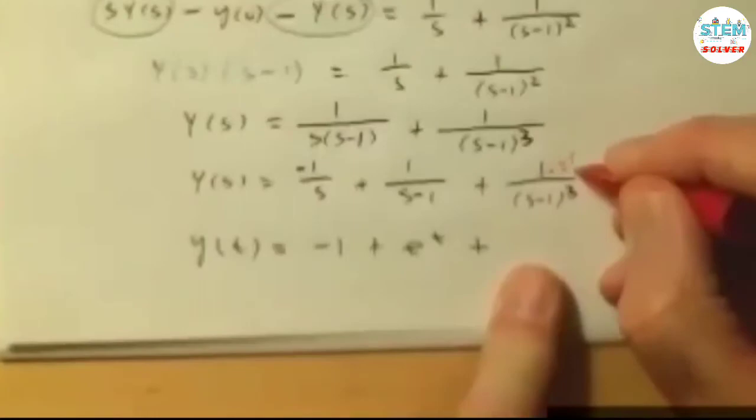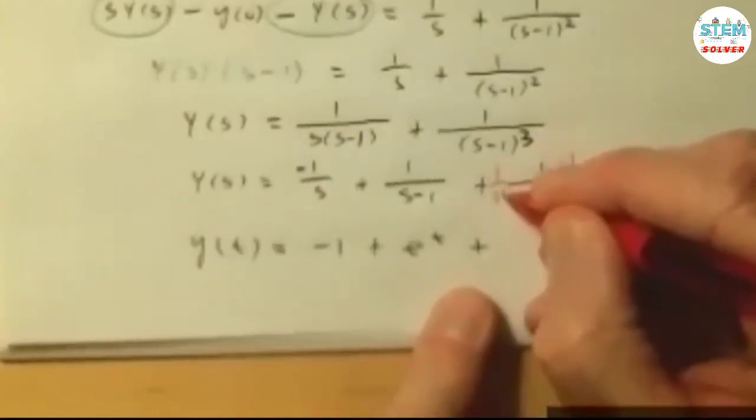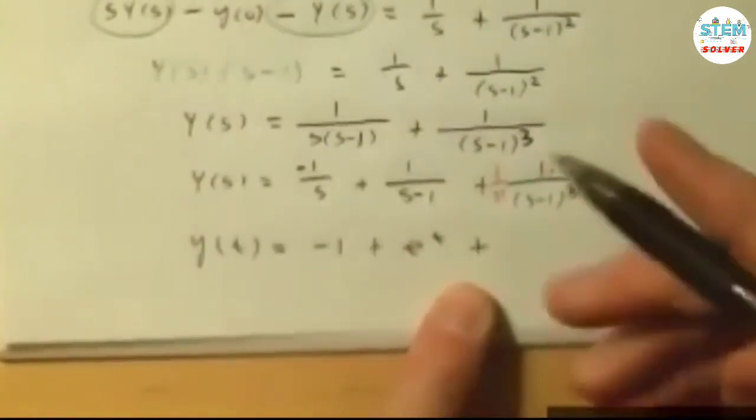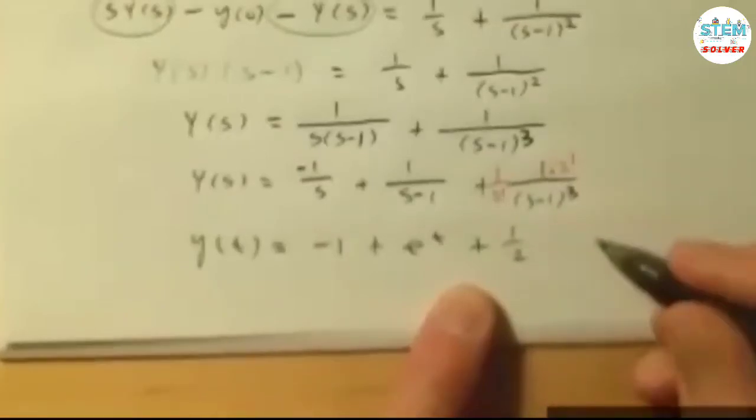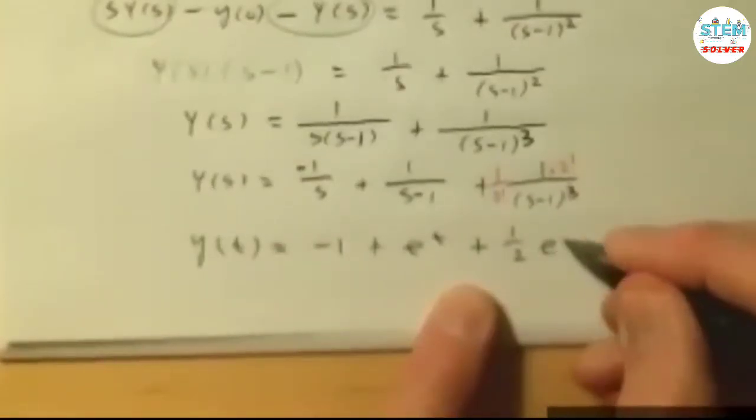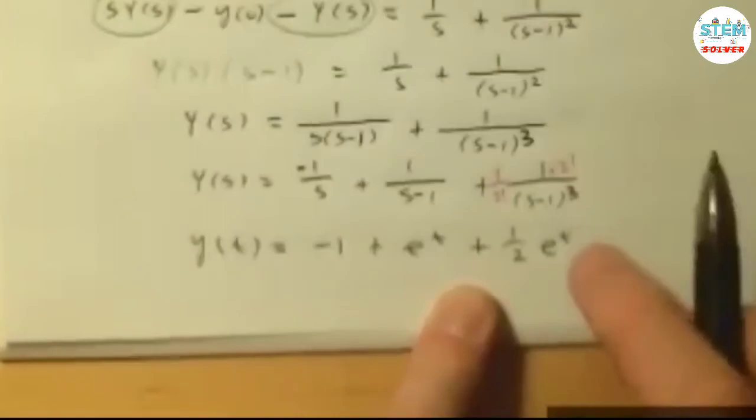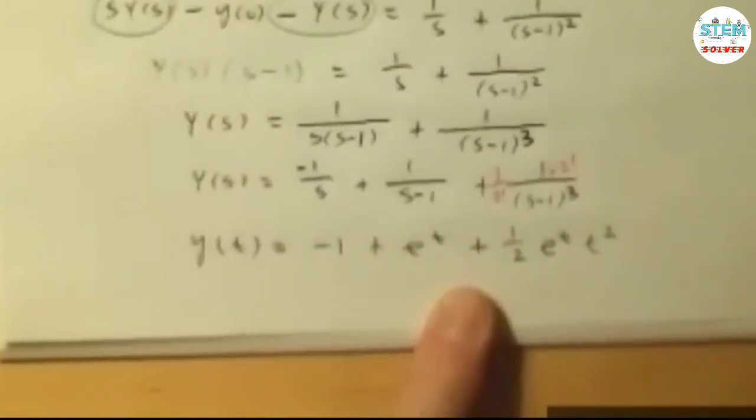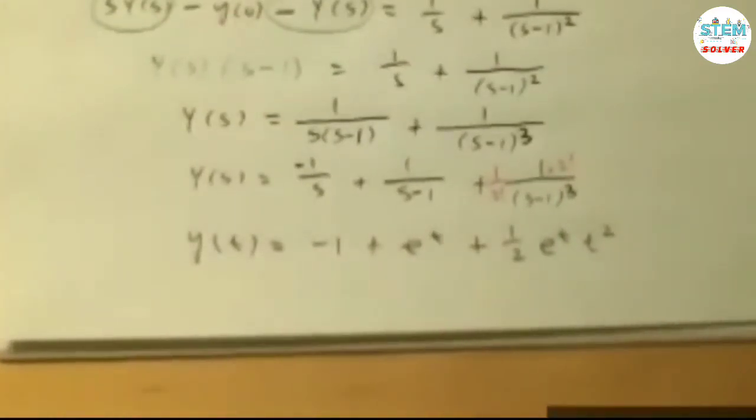What you're going to need up here is a 2 factorial. So you're going to have to divide by 2 factorial here. This is going to become 1 half e to the t, and then the s cubed part becomes t squared.